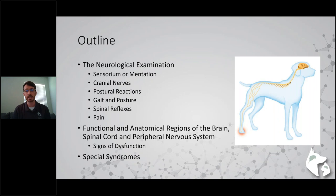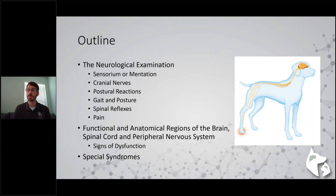We also want to check postural reactions or paw placements - does this patient know where their limbs are in space? Next is gait and posture; we want to know if patients are ambulatory or non-ambulatory and what that gait looks like. Then spinal reflexes: we check reflexes in all four limbs and also the cutaneous trunci and perineal, which can localize diseases to the spinal cord. Finally, we want to assess pain - is this patient experiencing discomfort, and can they feel their toes? That will change prognosis.